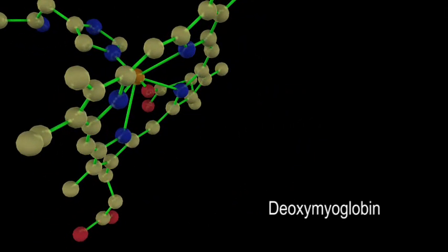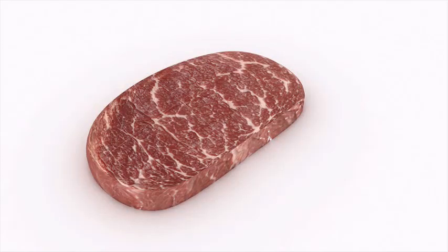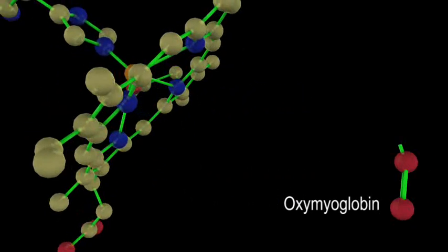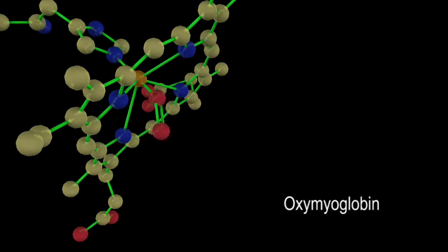When deoxymyoglobin is exposed to oxygen via cutting, unsealing, or grinding, the result is the most desirable bright cherry-red beef lean color. In oxymyoglobin, iron remains in the ferrous state but is allowed to form a bond with oxygen in a process known as oxygenation.